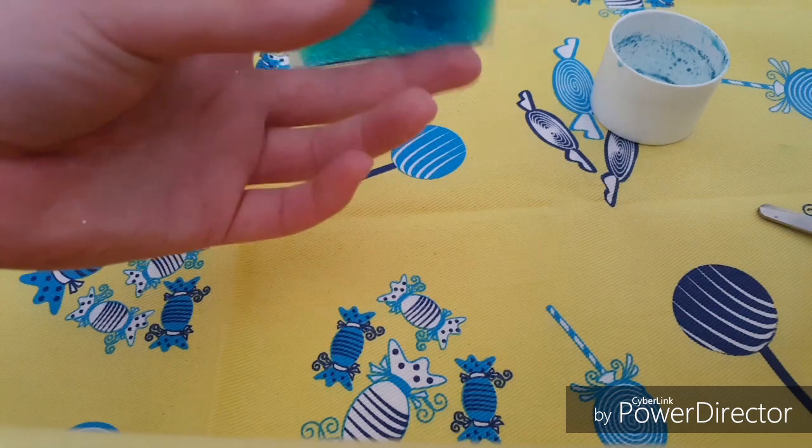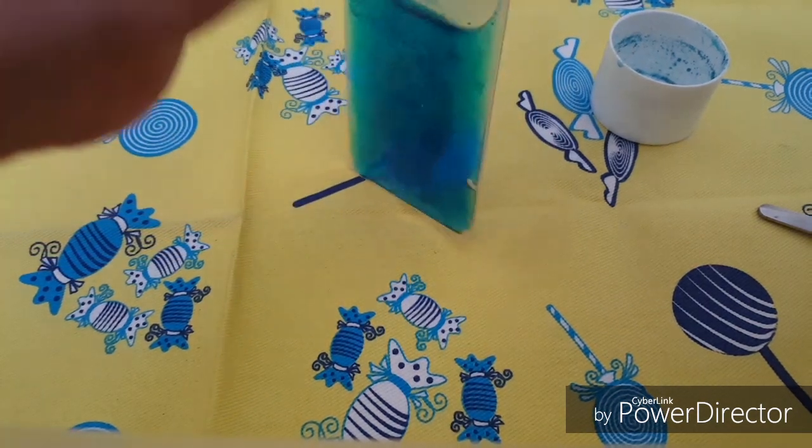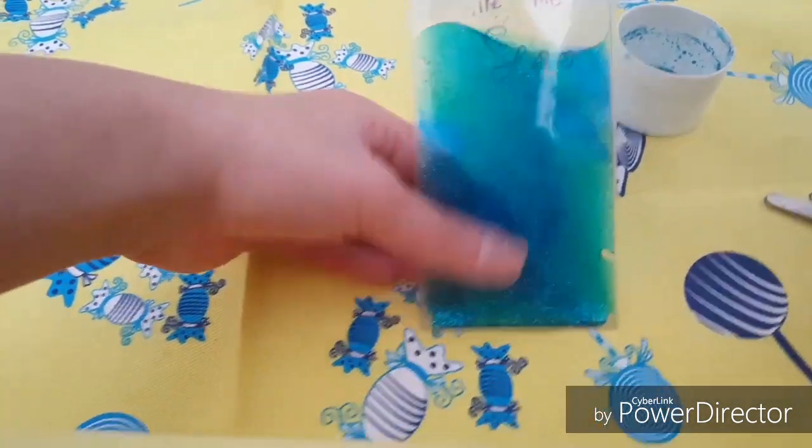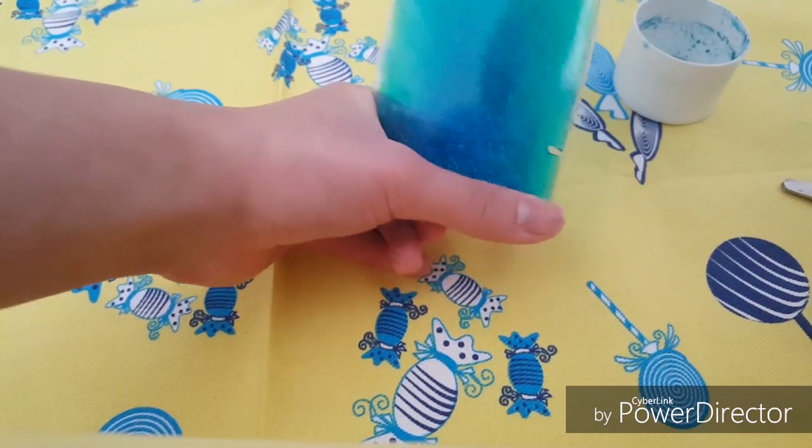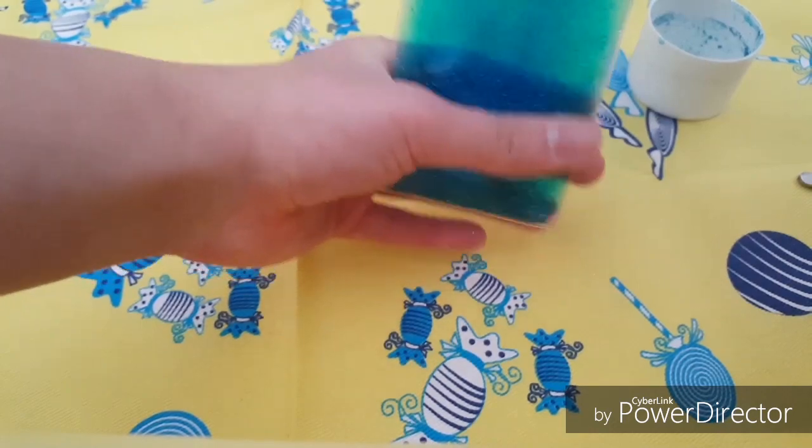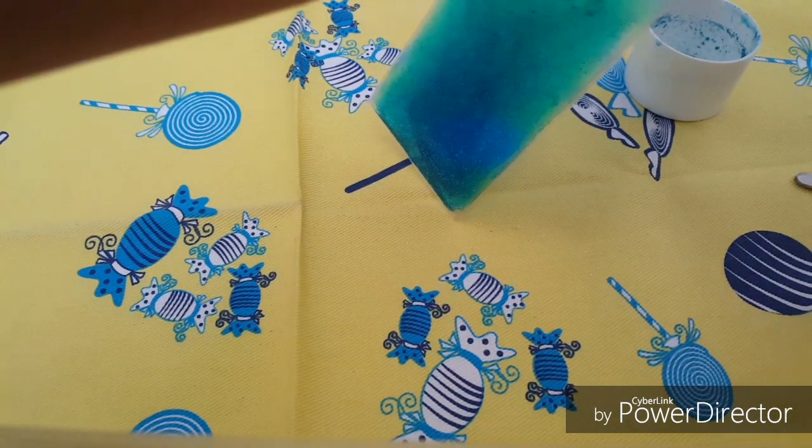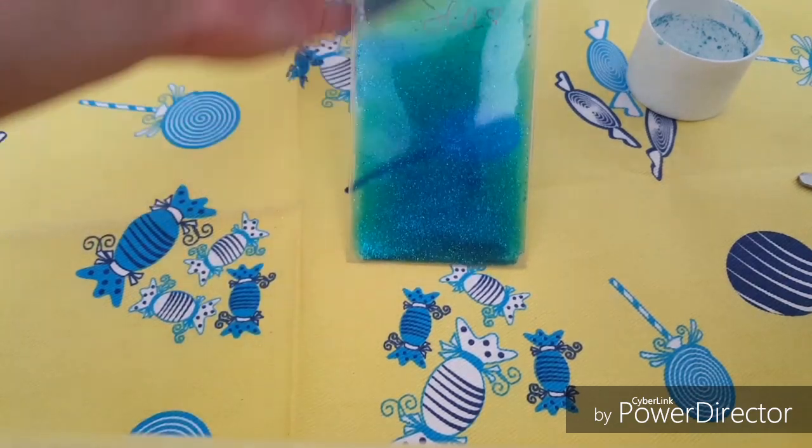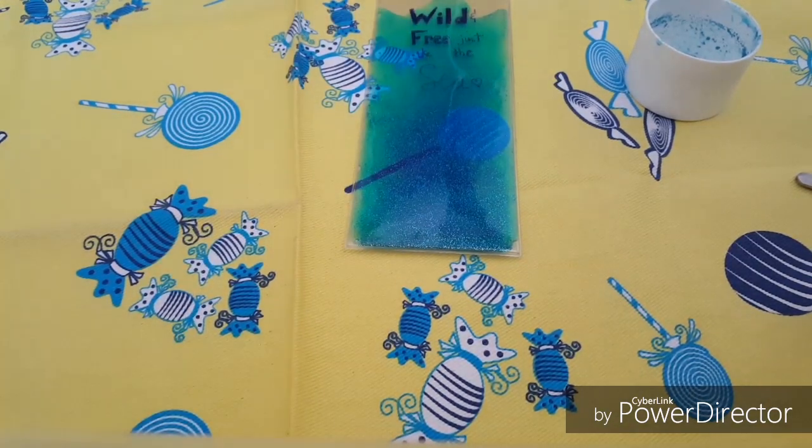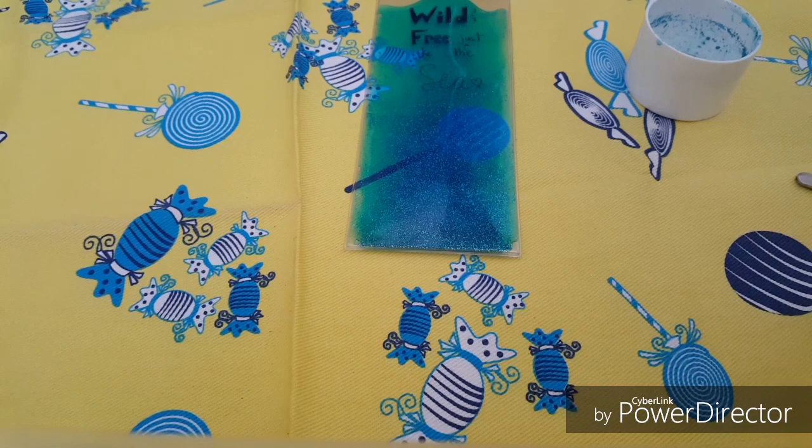So we can just press it around to see if the glitter flows really nicely. And you can just play around with it for a while. As you can see it's really nice and it doesn't really flow that way. I'm gonna go get some baby oil.